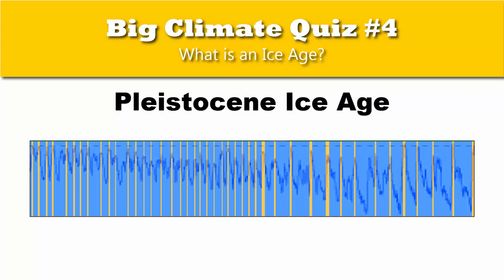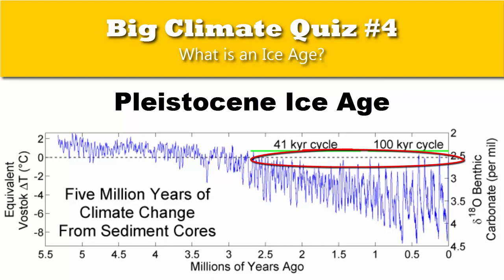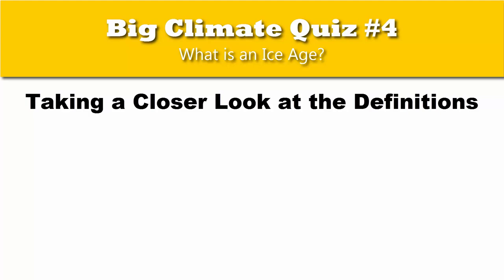The Pleistocene has had dozens of glacial and interglacial periods, with some of the interglacials being far warmer than our current Holocene. Since our Holocene is merely one of dozens of interglacials, there is no logical reason to set it apart from the remainder of the Pleistocene. We are still experiencing a period of glaciation in Greenland and Antarctica. The interglacial periods of the Pleistocene had been far cooler than the periods before the Pleistocene began, so even though interglacial periods are warmer than glacial periods, they are still far cooler than earlier periods of Earth's history.